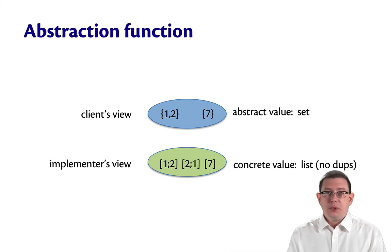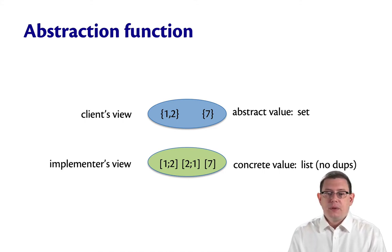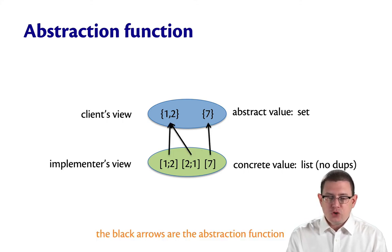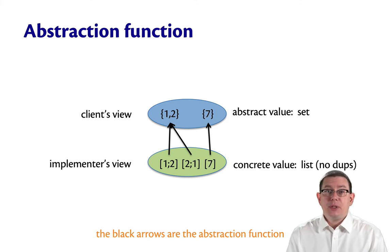But from the implementer's point of view, these are lists. And there are many possible lists that could represent each of these sets. For example, the set {1, 2} could be represented by the list [1, 2] or by the list [2, 1]. So there's a difference between the abstract values as understood by the client, and the concrete values as understood by the implementer. The abstraction function — the black arrows here — tells us how to interpret concrete values as abstract values, mapping from the list representation to the set representation.